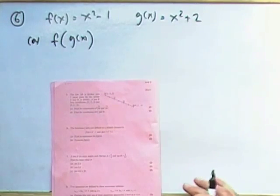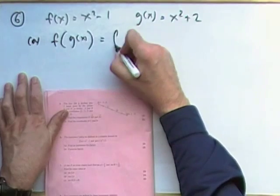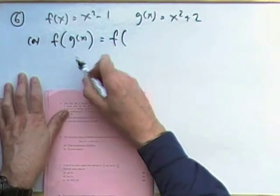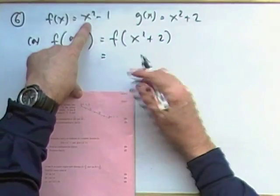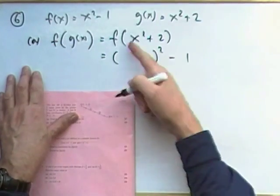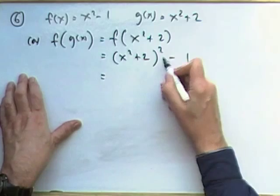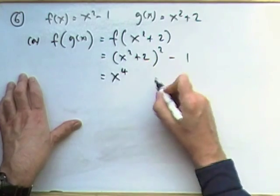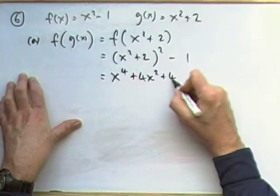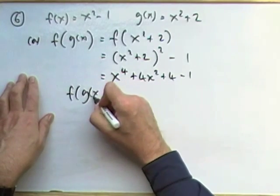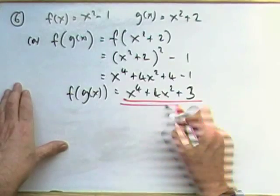Question 6: Functions of functions, nice ones. Find an expression for f of g of x. f of g of x means f is going to act on whatever g produces. g produces x squared plus 2. Then f acts on whatever it gets hold of by squaring the thing it gets hold of and taking off 1. I've got hold of x squared plus 2, so I'll need to square that and take away 1. Squaring a bracket: square the first is x to the 4, twice the product is 4x squared, square the last is plus 4 minus 1, which gives f of g of x equals x to the 4 plus 4x squared plus 3.